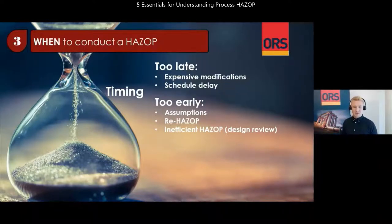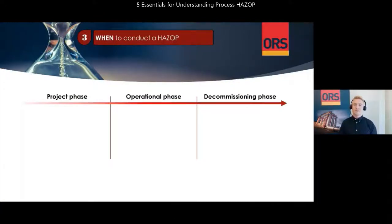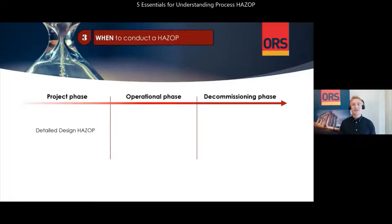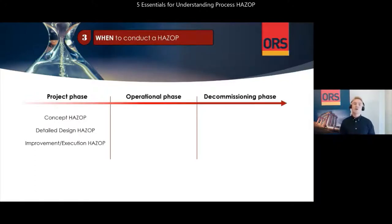Just as important as timing, it is important to have a solid management of change process to ensure that changes arising from the HAZOP are properly followed up. As a minimum, a HAZOP should be executed during detailed design — meaning when the design reaches its later stages with an almost finished design, the HAZOP serves as a milestone or a final check when the detailed design has been completed. In larger projects, HAZOP can also be conducted at the initial concept stage when design drawings are available to identify process design requirements, or during the improvement phase before construction commences.